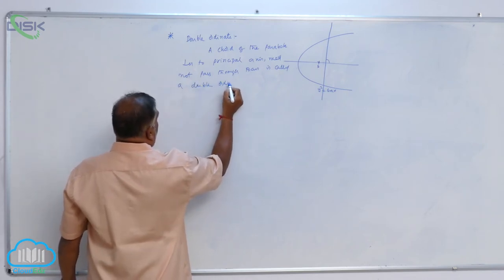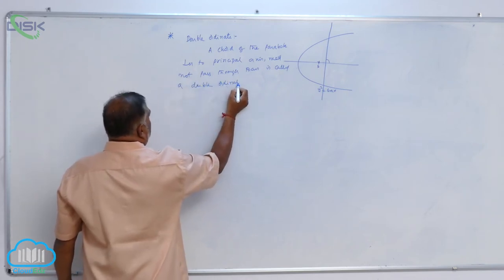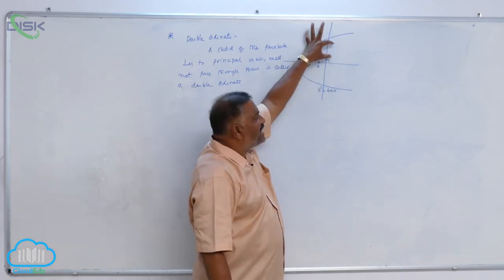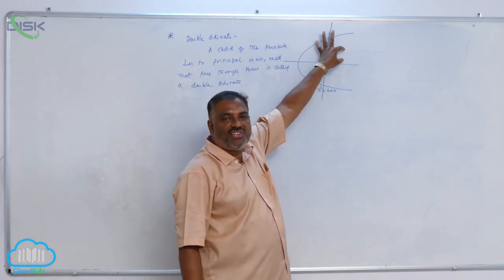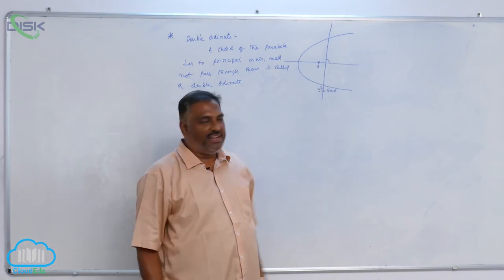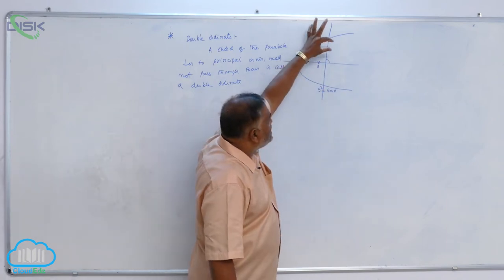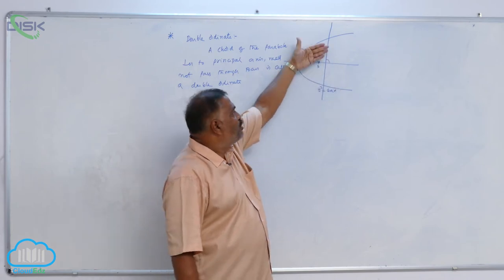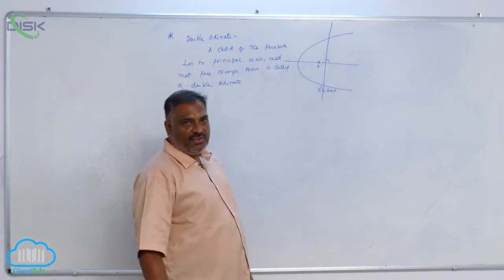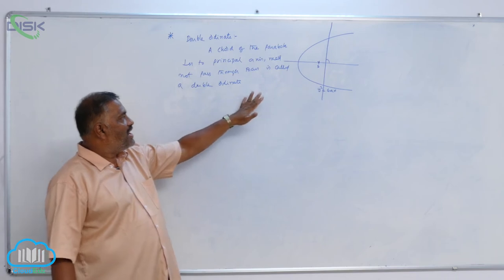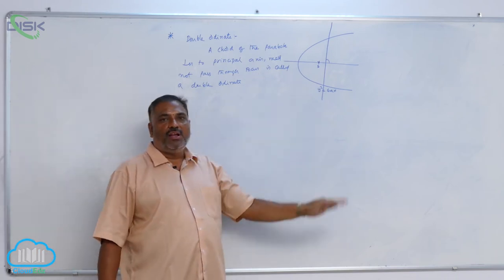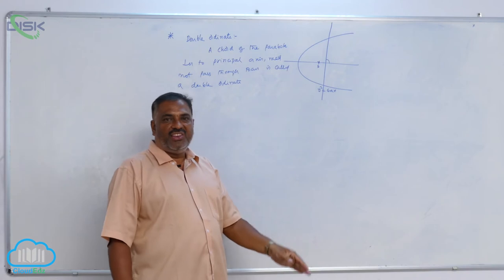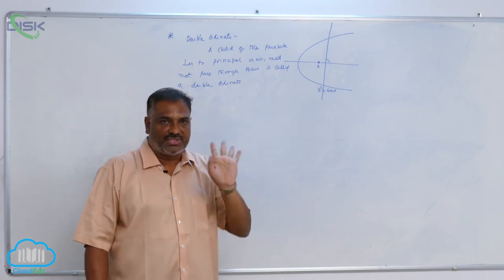Generally, if a perpendicular is drawn, the vertical distance is defined as an ordinate. So here, this is one ordinate and this is the second ordinate — together it is called a double ordinate. So a double ordinate is a chord of the parabola perpendicular to the principal axis, and need not pass through the focus.